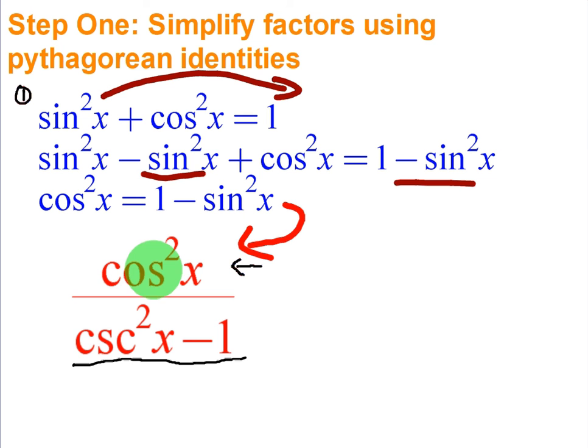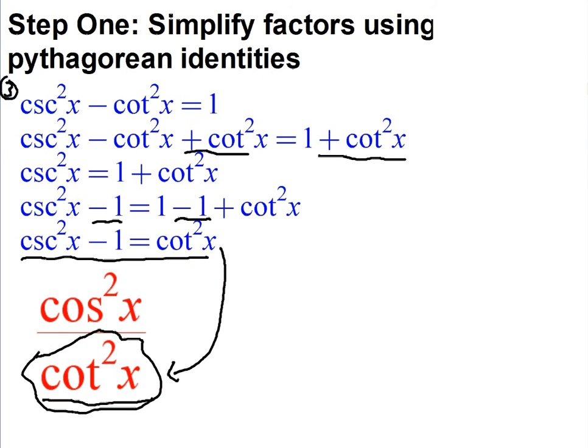We're going to do the same thing with the bottom. Again, the bottom looks like the third identity, so we're going to rearrange that one. So the third identity says that cosecant squared minus cotangent squared equals 1. For this particular rearrangement, we're going to add cotangent squared to both sides. Now we have cosecant squared is equal to 1 plus cotangent squared of x.